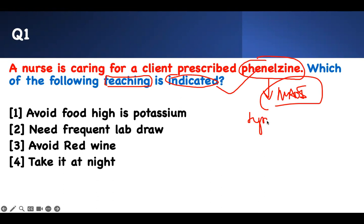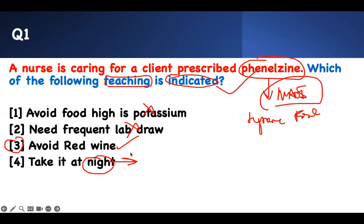What should you teach the patient? Tyramine foods — that's all. Avoid food high in potassium? Nothing to do with that. Need frequent lab work? You don't need lab work for this. Red wine? Yes — excellent. Tyramine foods: cheese, fermented food. Take it at night? There's no restriction there. So the right answer is number three, red wine. Anything that is tyramine-related is your answer choice.